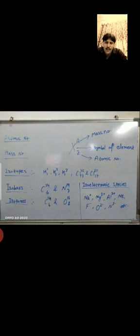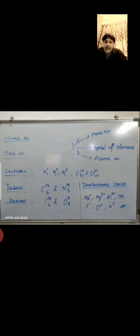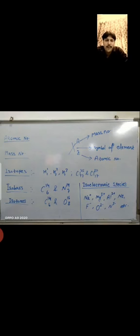The next one is isobars. Isobars are different atoms of different elements having the same mass number but different atomic numbers. So here the atomic number is different but the mass number is same. For example, Carbon-14-6 and Nitrogen-14-7: the mass number is the same but the atomic number is different — one atom represents carbon and another represents nitrogen.